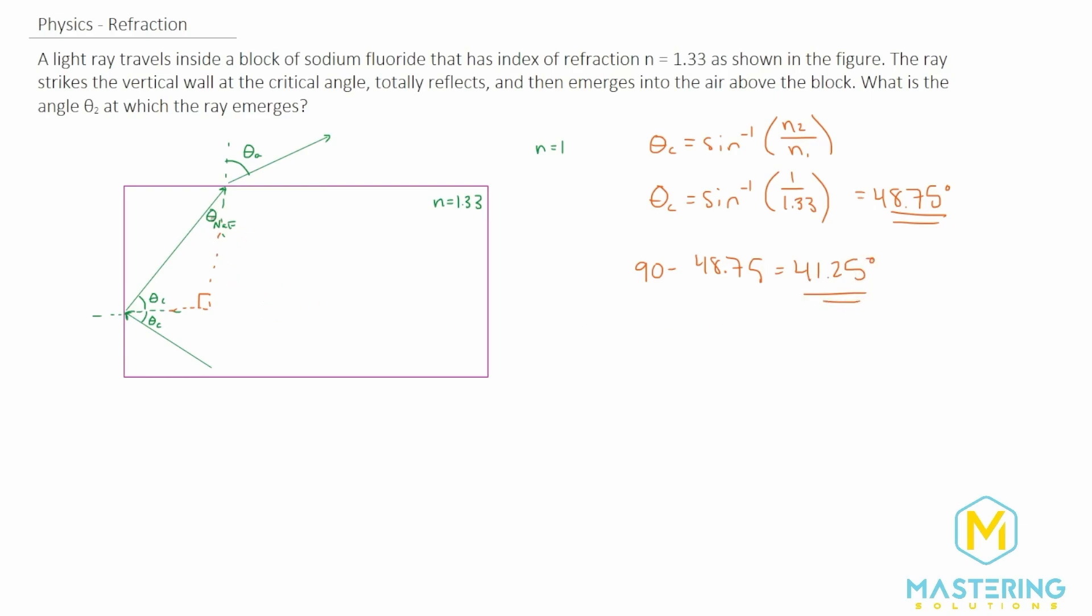Now this angle is important because now we can use Snell's law, we have our N1 and our N2 angles. And so if we write that we have N1 sine theta one is equal to N2 sine theta two, of course. Now let's rewrite this for what each of them are.